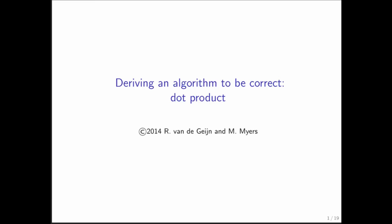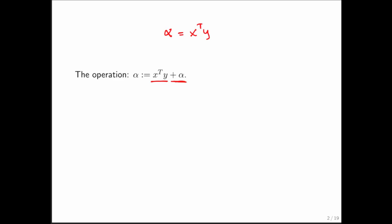So let's have a closer look at the dot product again. We're going to change it slightly. The dot product was to compute alpha equal to x transpose y. What we're doing instead here is we're updating the vector alpha with the result of x transpose y. And that's just going to allow us to explain things a little bit more simply.